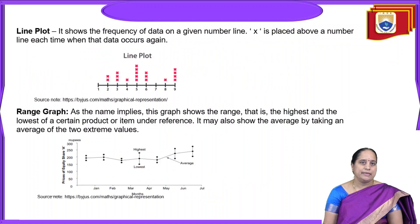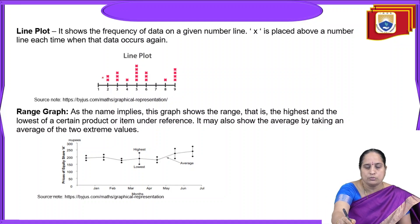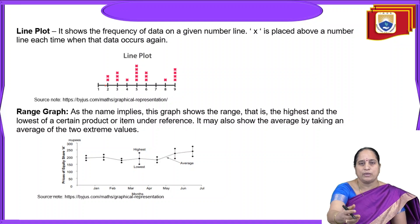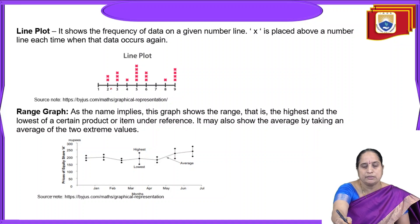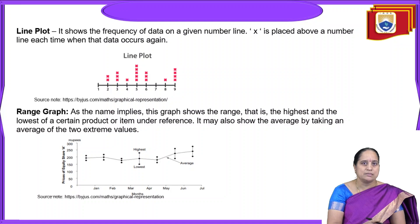The next type of diagram is a line plot, which shows the frequency of data on a given number line. We take the number line 1 to 9, and an X or cross is placed above the number line each time the data occurs again. For example, at 2 there are two crosses, meaning 2 repeated twice. In case of 3, it is showing three times, meaning 3 repeated thrice in the given data, and 4 repeated only once. So we can analyze the data this way.